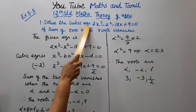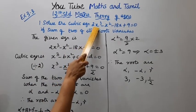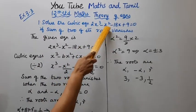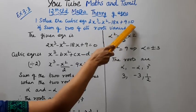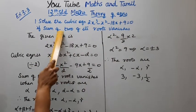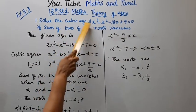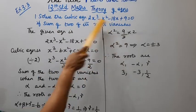Solve the cubic equation 2x³ minus x² minus 18x plus 9 equal to 0, given that the sum of two of its roots vanishes.